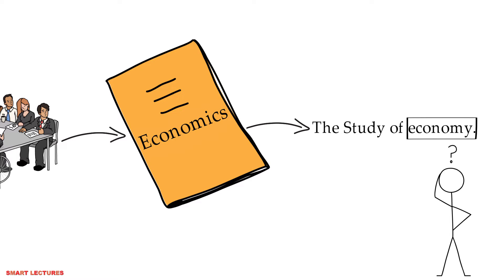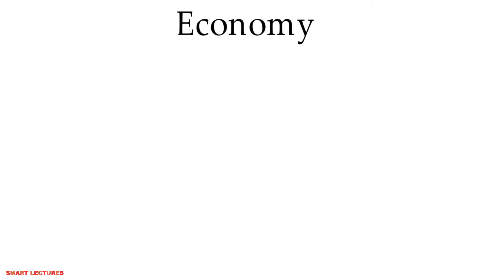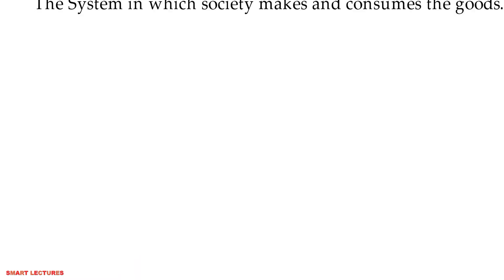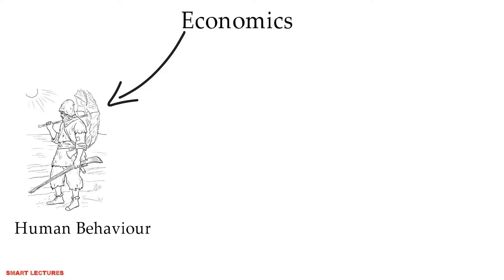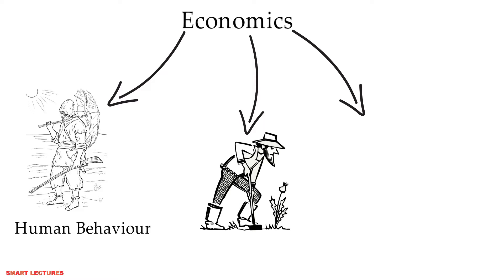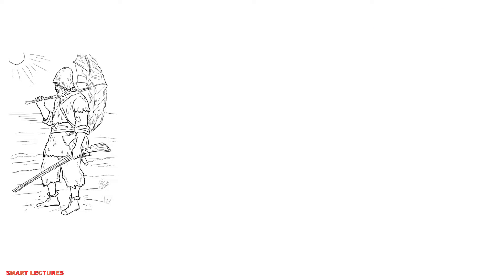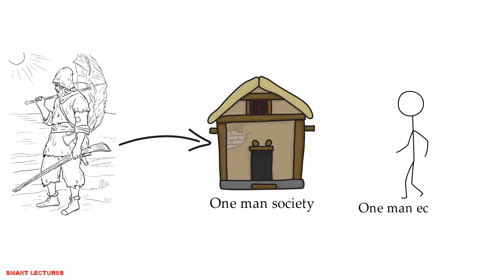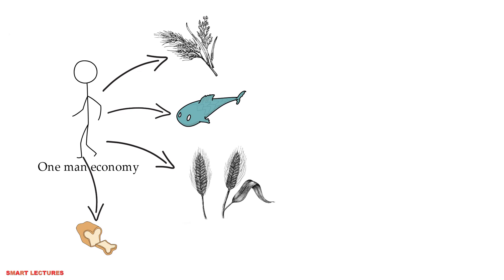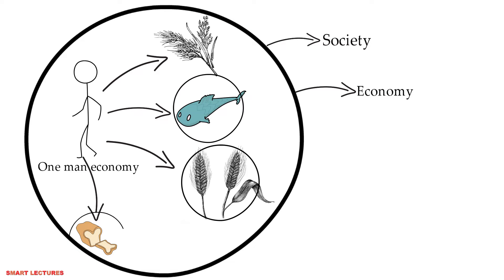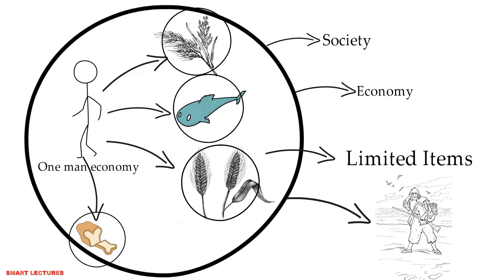Now the question is what is the meaning of economy? Economy means the system in which society makes and consumes goods. Economics means the study of human behavior and how goods are made and consumed in the economy. In this episode, there is a one-man economy where that one man is catching fish, growing rice and barley, and making bread. So in this economy, only these limited items are being made and consumed by the same person.